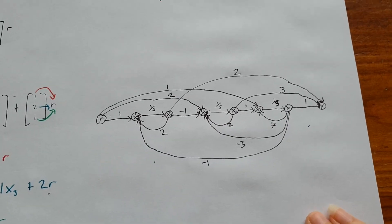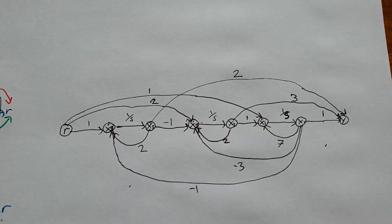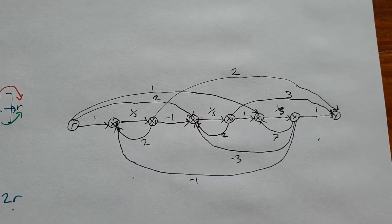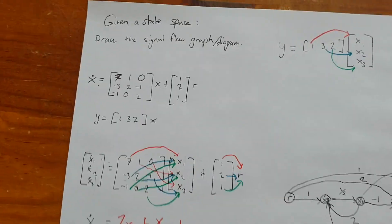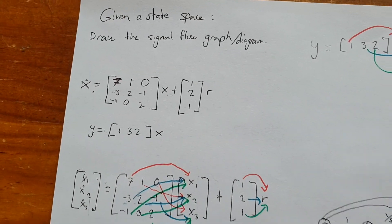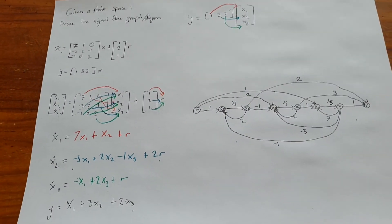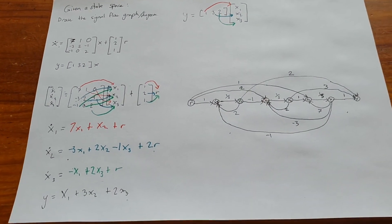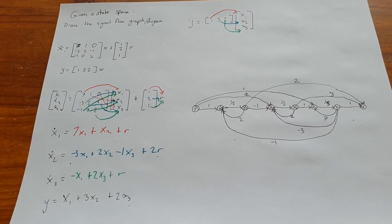There you go — that's your signal flow diagram from your given state space. I hope that was useful and you enjoyed it.